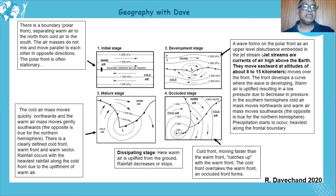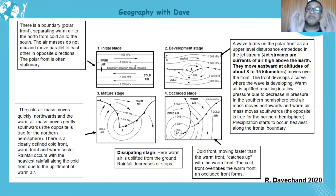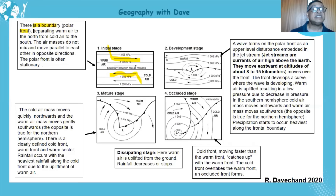There's a debate about calling it the initial stage, but we'll call it the first stage. Warm air from the subtropical high and cold polar air flow in opposite directions. There is a boundary — the polar front — separating warm air to the north from cold air to the south. The air masses do not mix; they move parallel to each other in opposite directions.